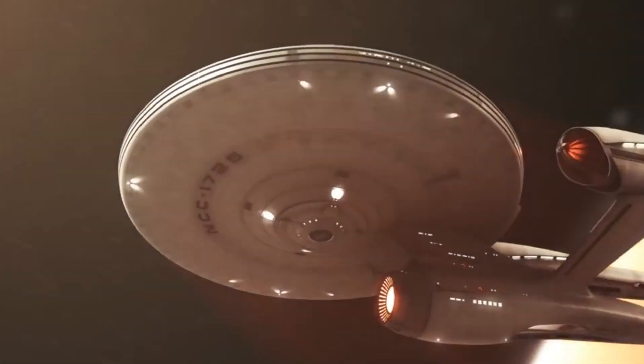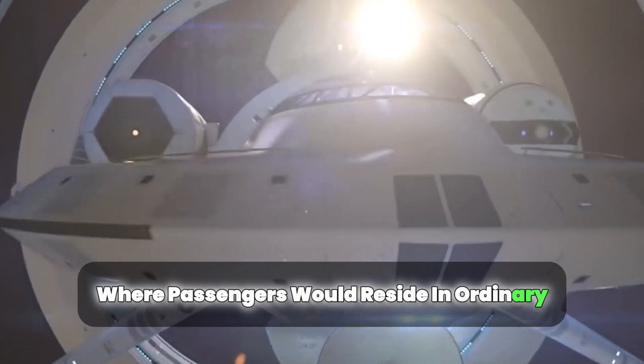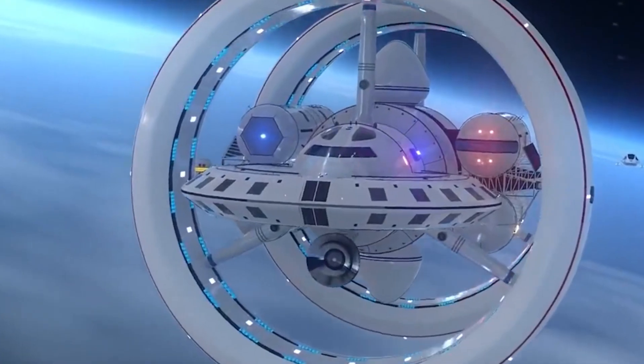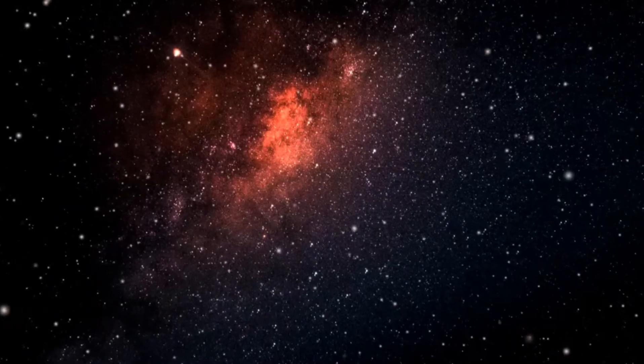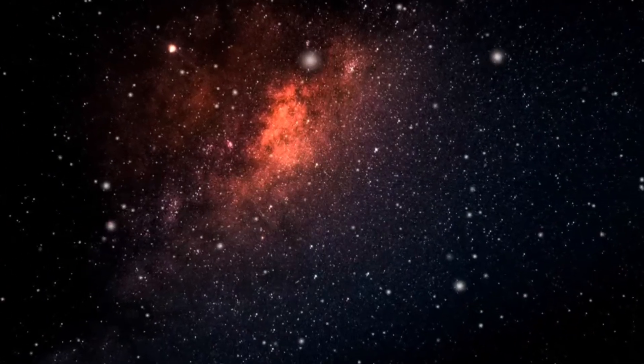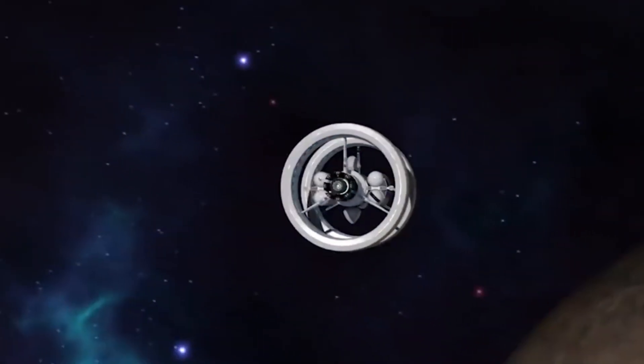Alcubierre's solution involves a central region where passengers would reside in ordinary flat spacetime. Behind them, the fabric of space expands and pushes the passengers forward, much like how the universe itself is currently expanding, thereby pushing galaxies apart from one another.